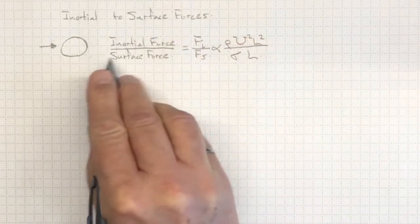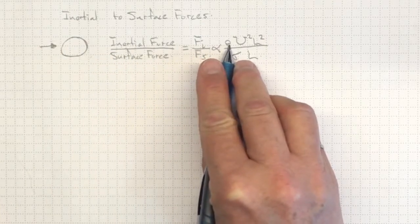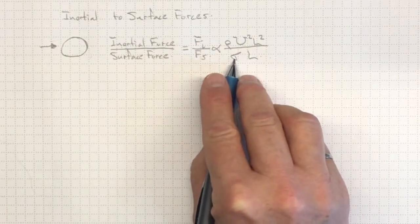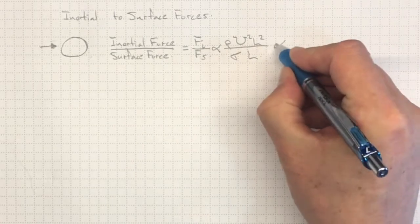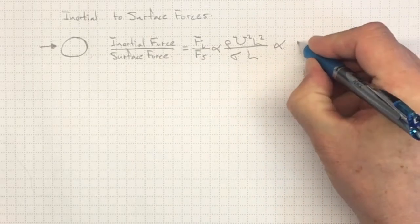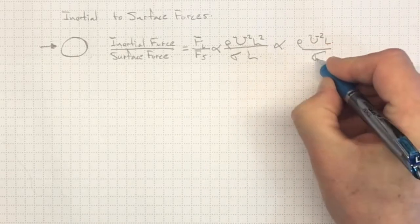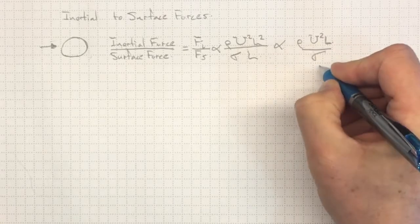So the ratio of inertial forces to surface forces will depend on the density, the velocity squared times the length squared, divided by the surface tension times the length. Or if we cancel out the lengths, we'll wind up with rho u squared l over sigma. Density, surface tension, velocity squared, and the size of the scale that we're looking at.